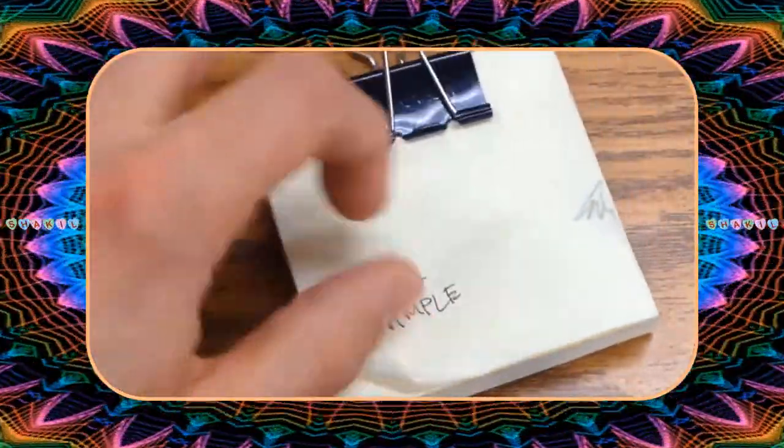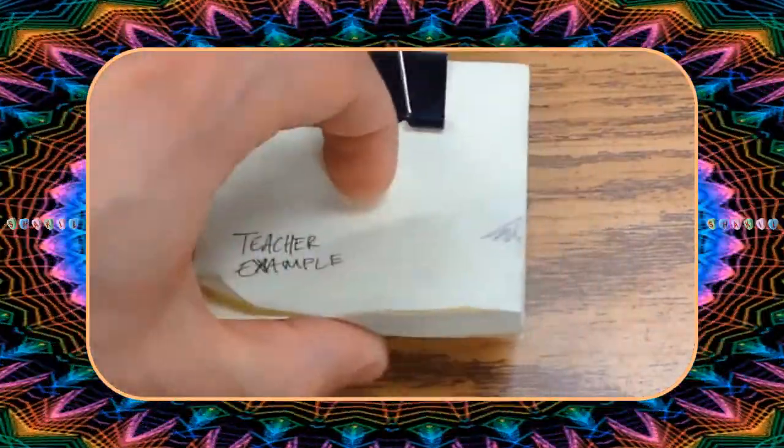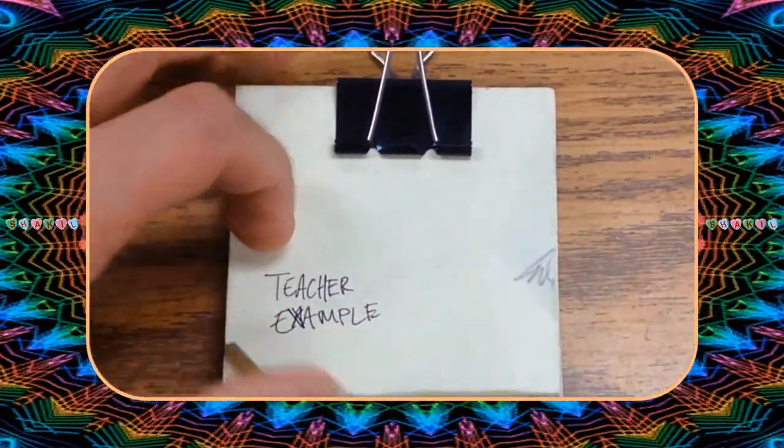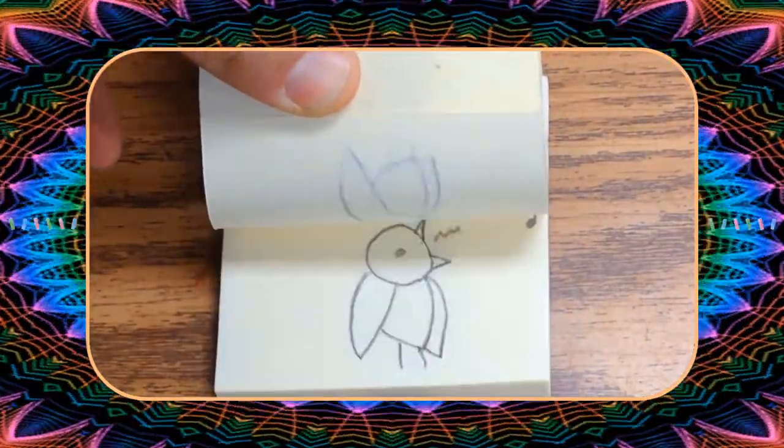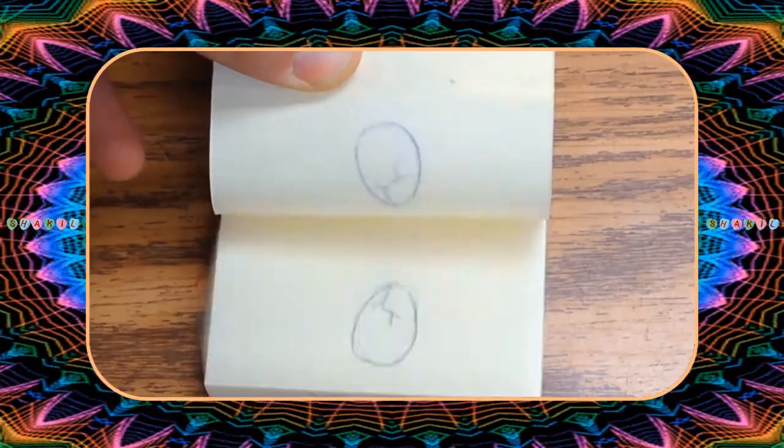Some people like to use post-it notes. Those are nice because they're already put together and they're very thin and you can kind of slip through them.